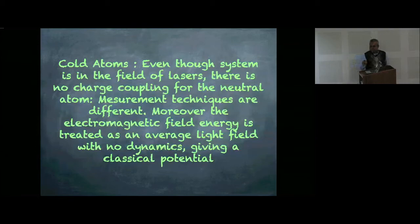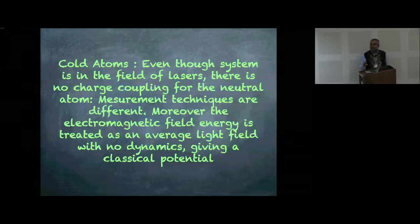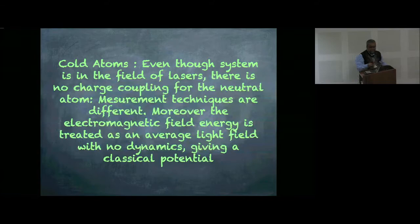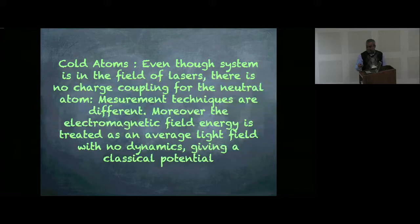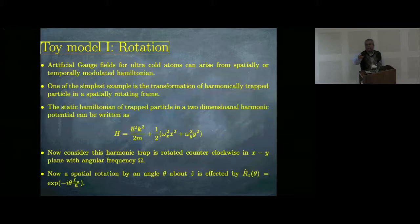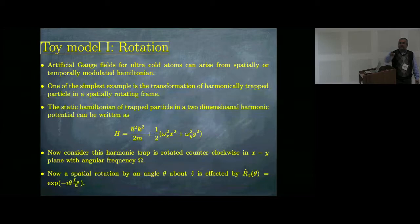One very important aspect of cold atom measurements is that even though the system is in the field of lasers, there is no charge coupling for neutral atoms. As a result you cannot really couple with the true electromagnetic field the way an electron does, and measurement techniques are very different. Moreover, the electromagnetic field energy is typically treated as an average light field with no dynamics — a classical potential. There is therefore interest in generating something which looks like a dynamical gauge potential in ultracold atoms.